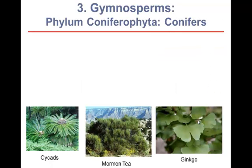Now let us consider the gymnosperms — the first of the two groups of plants that belong to the seed plants. The word gymno means naked and sperm means seed. These are the naked seed plants. Their seeds are not produced inside a fruit or covered by a fruit; rather they are produced on the scales of a cone, and they are naked on that scale — hence the name gymnosperms.